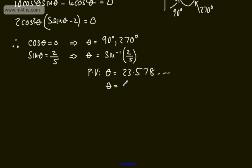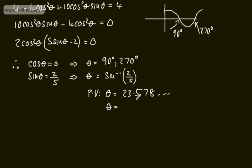We know that the sine curve is symmetric, so we can simply use symmetry to say that the next solution will be 180 minus the 23.578.